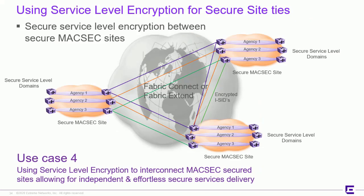We can extend this further — taking secure MacSec domains with service-level encryption and interconnecting them across vast distances if required. This can be done through Fabric Connect or Fabric Extend, and the encrypted ISIDs can provide interconnection between major sites over a provider network, dark fiber, or any infrastructure that does not require fragmentation or reassembly. If fragmentation or reassembly is required, we simply use the XA series to provide that end-to-end extension of the encrypted footprint.